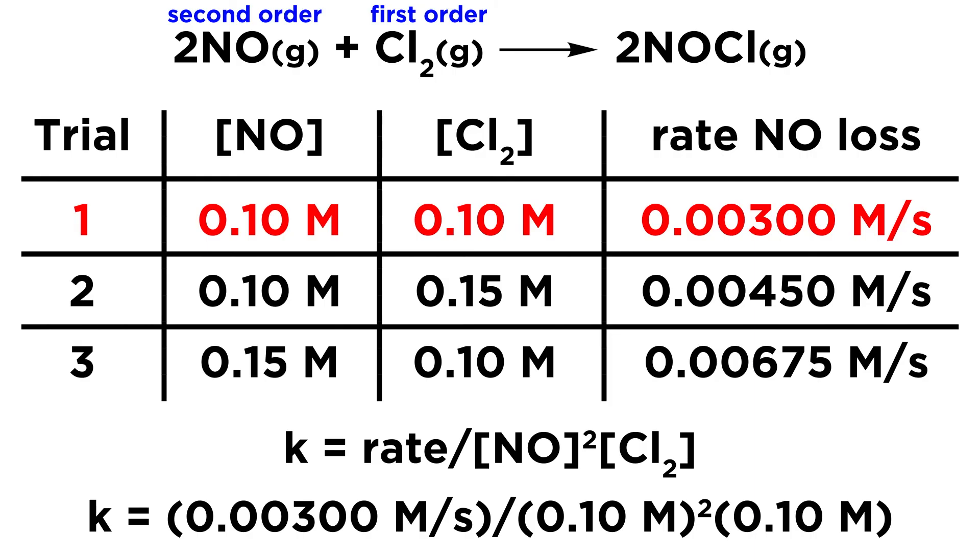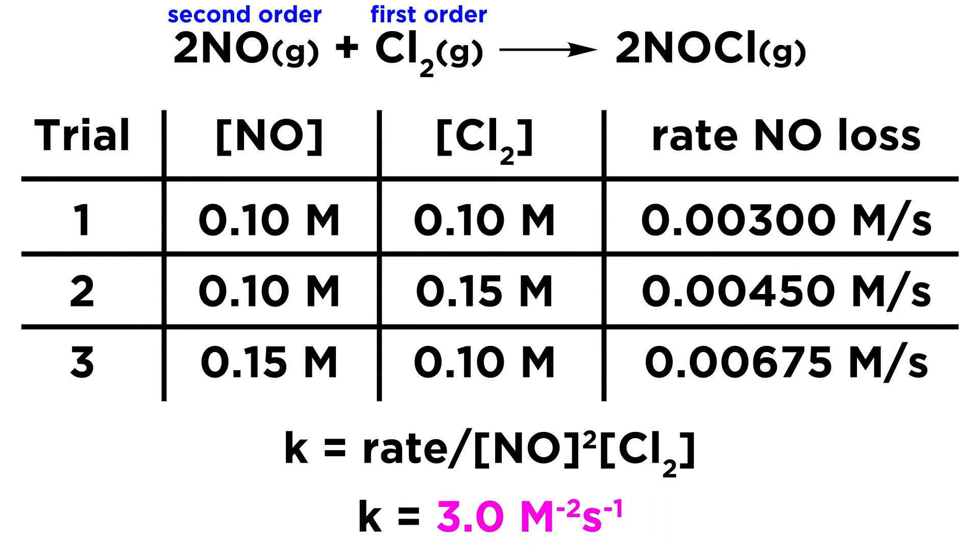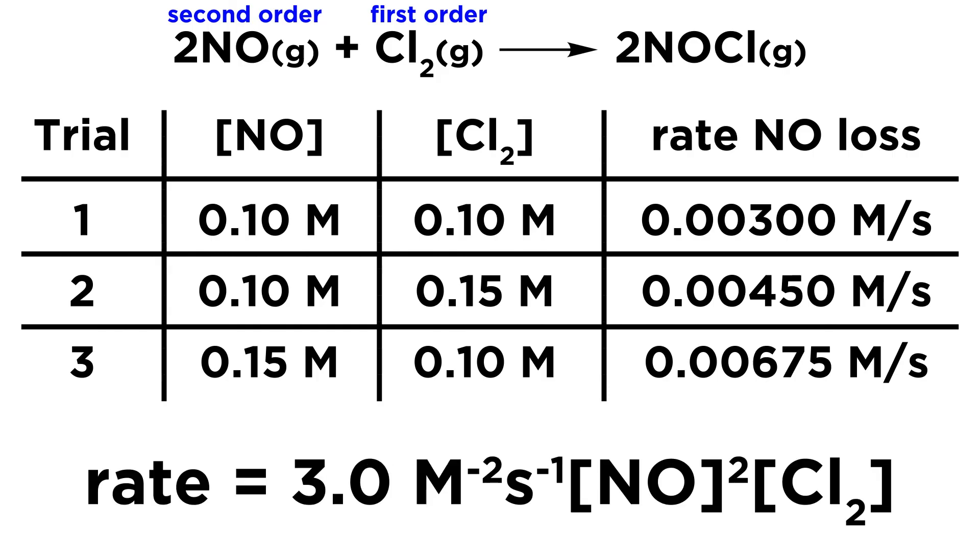So K is equal to the rate, or 0.00300 molar per second, divided by NO concentration squared, so that's 0.10 molar squared, times Cl2 concentration, which is 0.1 molar. Now we can't forget to square that NO concentration, so that becomes 0.01 molar squared, and then that all simplifies to 3.0 molar to the minus 2 seconds to the minus 1. So altogether, this will be our rate law with the rate constant.